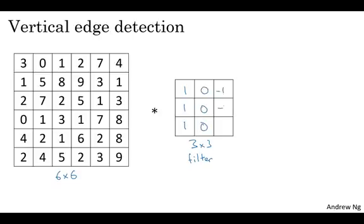I'm going to construct a three by three filter, or three by three matrix that looks like this: 1, 1, 1, 0, 0, 0, -1, -1, -1. Sometimes research papers would call this a kernel instead of a filter, but I'm going to use the filter terminology in these videos. What you're going to do is take the six by six image and convolve it — the convolution operation is denoted by this asterisk. One slightly unfortunate thing about the notation is that in mathematics the asterisk is the standard symbol for convolution, but in Python this is also used to denote multiplication or element-wise multiplication, so this asterisk has dual purposes — it's overloaded notation. But I'll try to be clear when this asterisk refers to convolution.